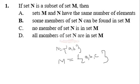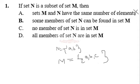Now let's see whether any of these options hold true. Option A: set M and N have the same number of elements — that's not true because N has two elements and M has three. Option B: some members of set N can be found in set M — this is not correct either, because 'some' implies there is an element in N not found in M, like if N had an element q. But if that were the case, N would not be a subset of M, so this option is also not true.